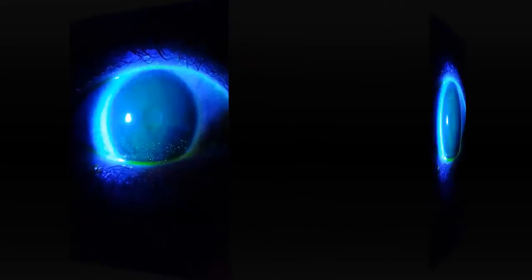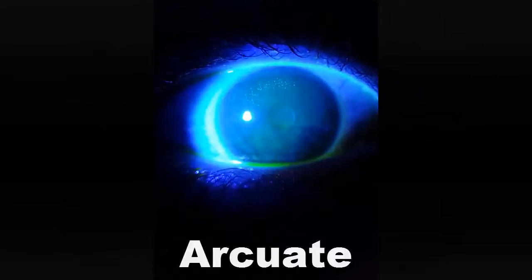We call this arcuate staining. Why does this happen? You have to start thinking about how tight this lens is. Look at the edges — are they properly blended or finished? How do you fix it? If you're keeping the same lens, send it back for further blending of transitions, or even polishing or re-edging. You might have to reconsider diameter or optic zone sizes.